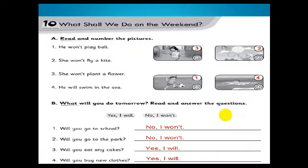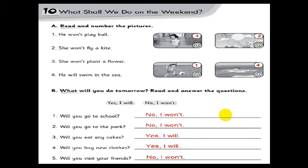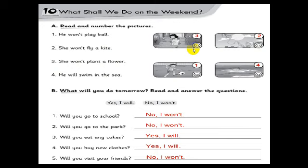Let's practice more. This is workbook page 57. Exercise A: read and number the pictures. We have four pictures and four sentences. Number 1: he won't play ball - sad face. Number 2: she won't fly a kite - sad face. Number 3: she won't plant a flower - sad face. Number 4: he will swim in the sea - happy face, meaning he will do this thing.